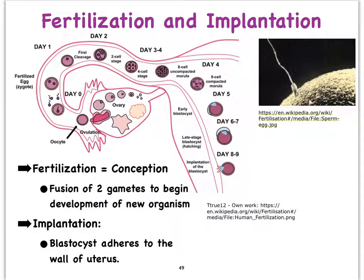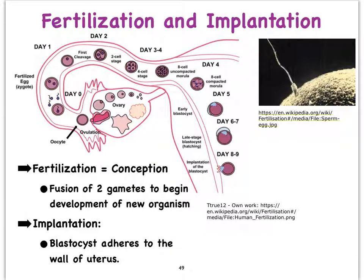Just to clarify: when we use the term fertilization, it refers to the fusion of two gametes. In our situation, it would be the fusion of the nucleus of the sperm cell with the nucleus of our secondary oocyte.